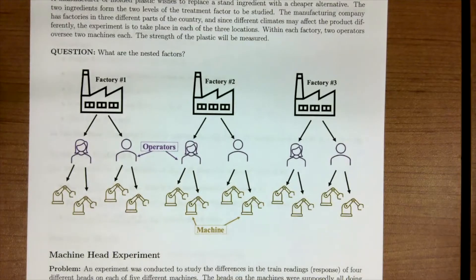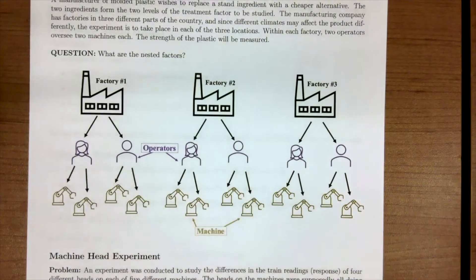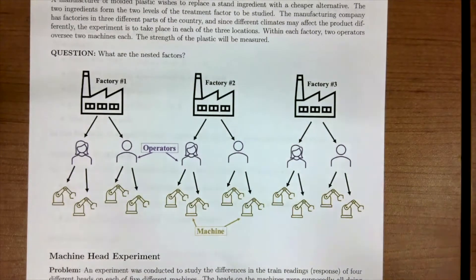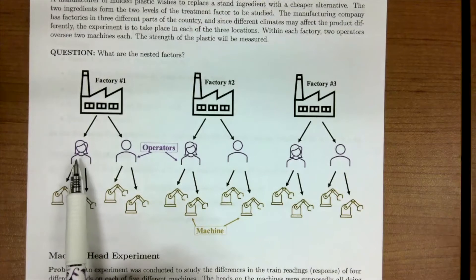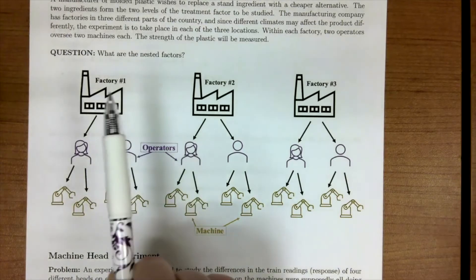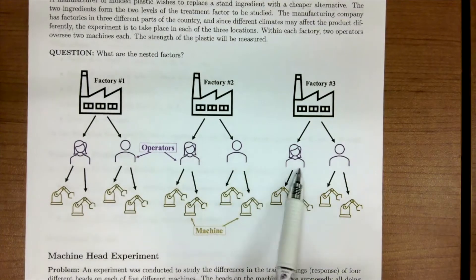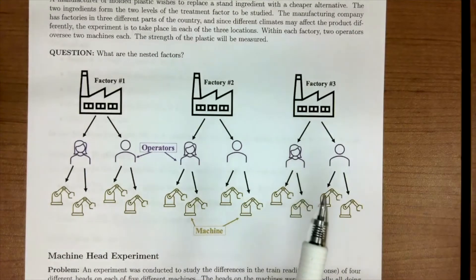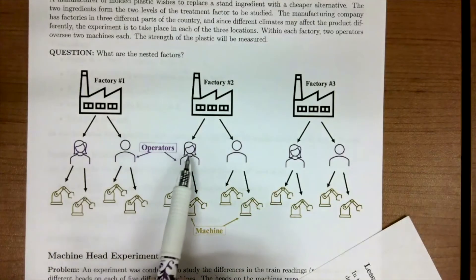Within each factory, we have two operators overseeing two machines each, and then we're going to measure the strength of the plastic. In this example, our operators are going to be nested within factory, and our machine is going to be nested within operator. The reason why is because these three factories are in completely different spaces. We wouldn't expect the company to take one operator and drag them all the way to another factory to run the same thing. So one factory has these two operators, and those two operators aren't the same as those in the other factories.